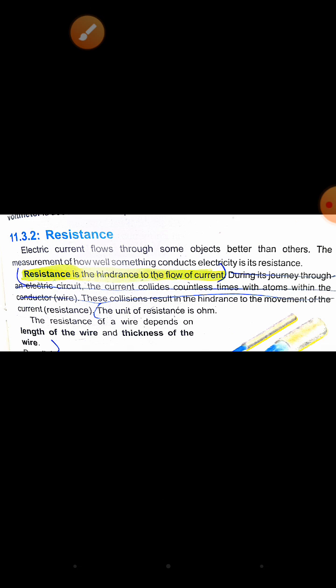Resistance impedes current flow. It is the hindrance to the flow of current during a journey through an electric circuit. When electricity passes through the circuit, the current encounters countless collisions with atoms.